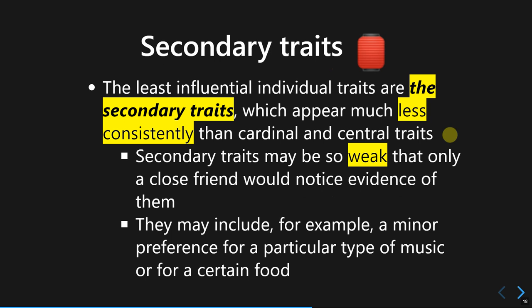The last and least influential part is what Allport calls secondary traits. These appear much less frequently than central or cardinal traits. Only the closest people in your life would recognize secondary traits, as they are very weak and don't often appear in common daily situations. Examples might include your preference for food or music, or admiration for a particular figure — things your closest friends would notice but mere acquaintances would not.